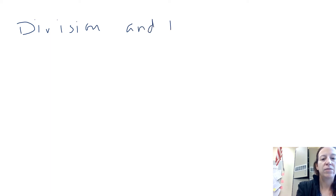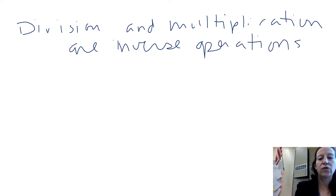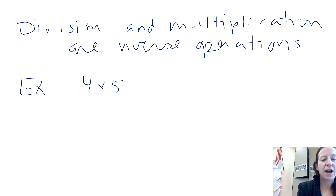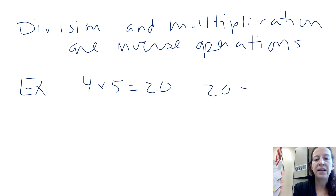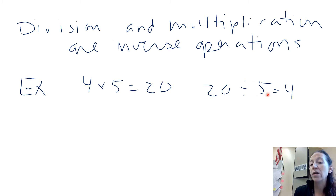Division and multiplication are inverse operations, meaning they undo each other. For example, 4 times 5 is 20, and then 20 divided by 5 gives you 4. What we just did was a multiplication problem where we had two factors and looked for the product. When you're doing division, you have the product and one of the factors, and you do division to find the other factor.